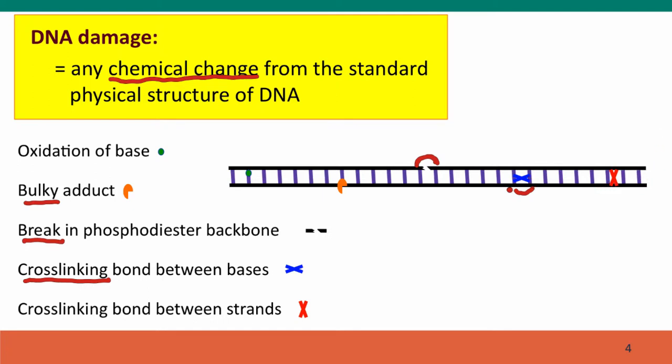So the strands can't even come apart to be replicated. All of these kinds of damage can cause mutations, either directly or as a consequence of the cell's efforts to repair them. It's important for the cell to repair them because many of these forms of damage prevent DNA replication and so they'd otherwise kill the cell.